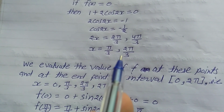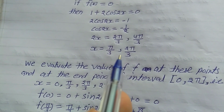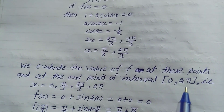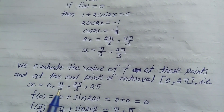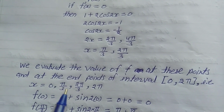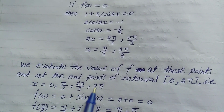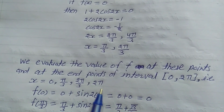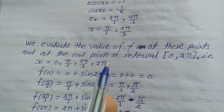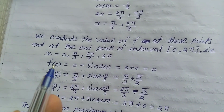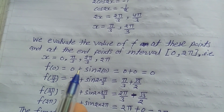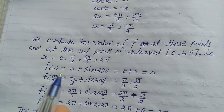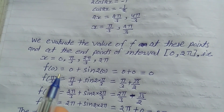We evaluate f at these critical points and at the endpoints of the interval [0, 2π]. That is, at x = 0, π/3, 2π/3, and 2π — four values of x to find the f(x) values. For f(0), substitute into f(x) = x + sin(2x) with x = 0.